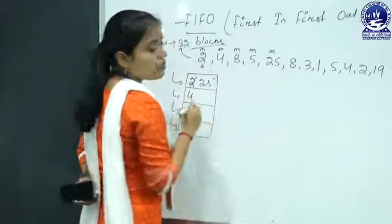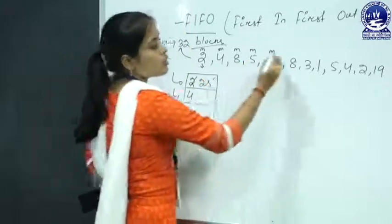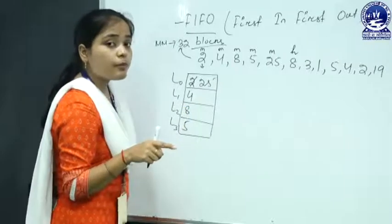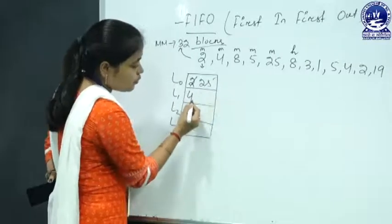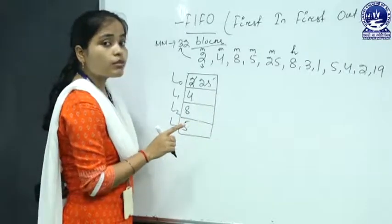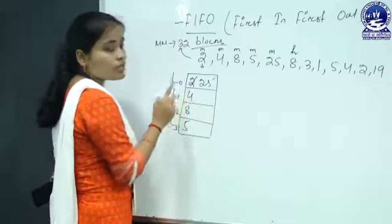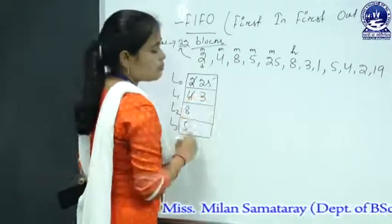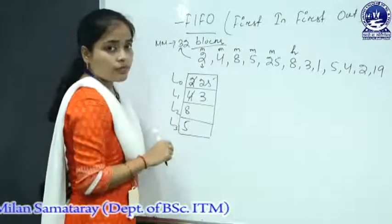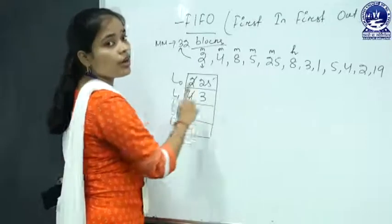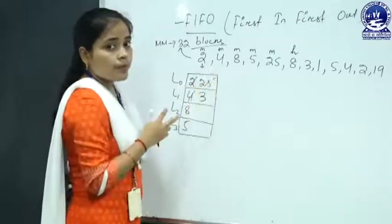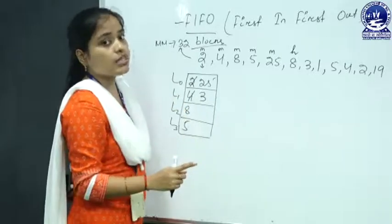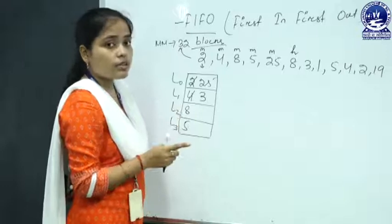Then block 8 is requested — 8 is present in cache, so it is a hit. Then block 3 — absent. The first block that entered is now block 4 (since block 2 was already replaced and 25 is the latest). So replace block 4 and place block 3. In associative mapping, you can map any block into any line, so I am not checking line-to-block correspondence as in direct mapping.